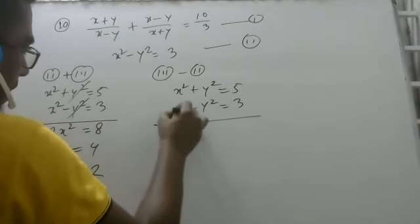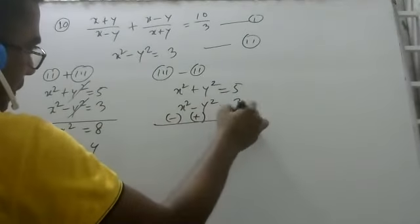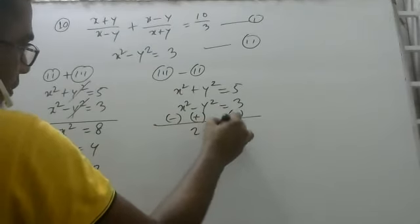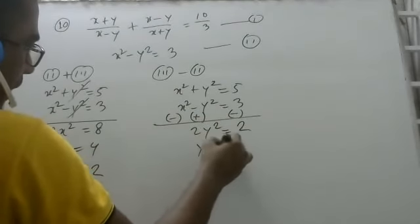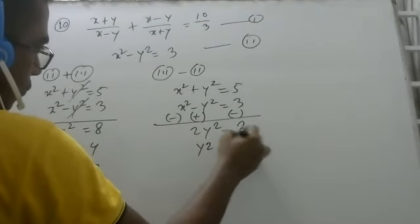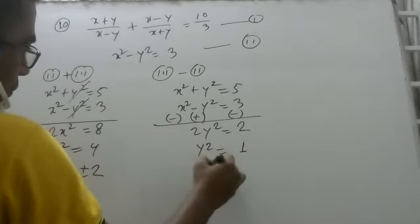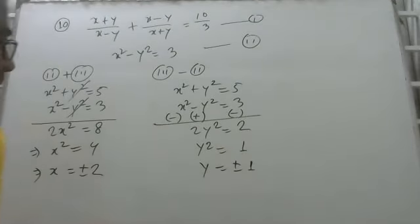2 into (x squared plus y squared) is equal to 5, and x squared minus y squared is equal to 3. So x squared is equal to 2 and y squared is equal to 2, giving y equal to plus or minus 1.